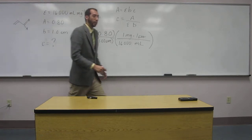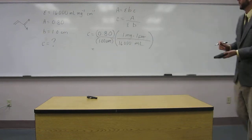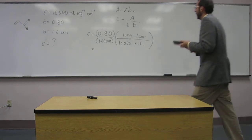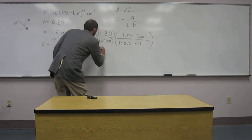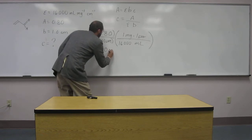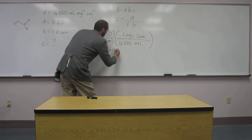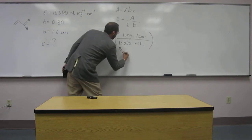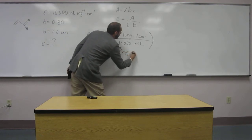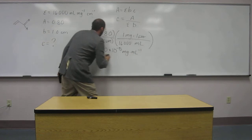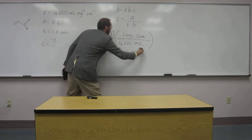So now all we've got to do is plug in. So 0.80 divided by 16,000. 5.0 times 10 to the negative fifth milligrams per milliliter. So that would be the concentration.